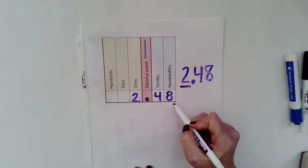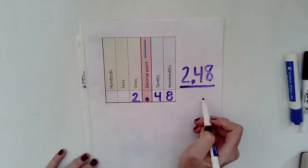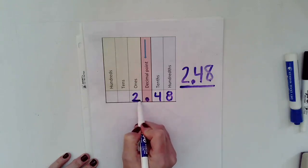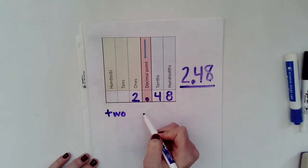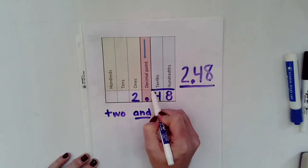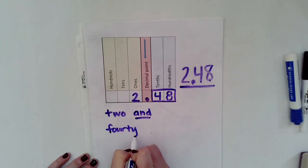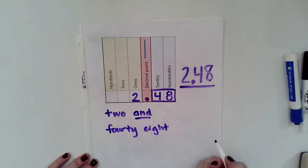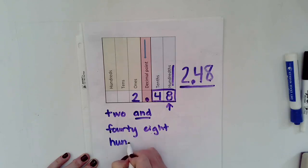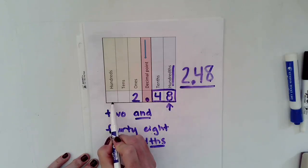These numbers to the right of the decimal are part of a whole, so they are smaller than a whole. To say this number out loud or write it in word form: start with the whole number, which is two. Then, anytime you see a decimal point, you write the word 'and.' Next, say the number after the decimal — we know that number to be forty-eight. Since the eight ends in the hundredths place, we end our number with the word 'hundredths.' Notice I said 'hundredths,' not 'hundreds' — the 'th' at the end is important.